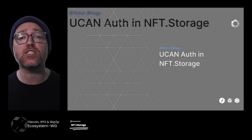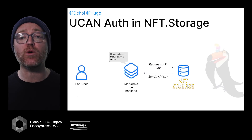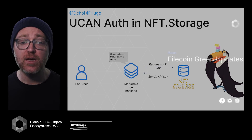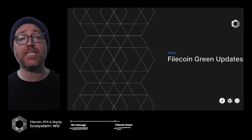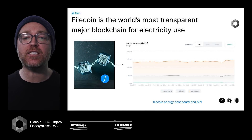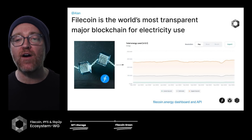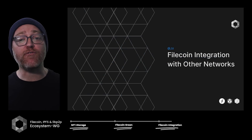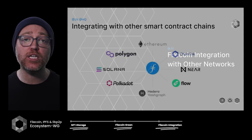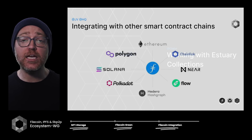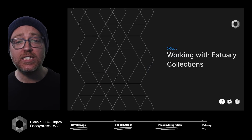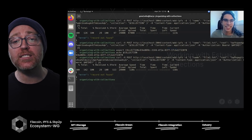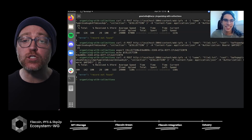The NFT Storage Team tells us about an integration with Fission's UCAN authorization. The Filecoin Green Deep Dive demos how you can estimate the energy of Filecoin SPs and check whether they are using renewable energy. We also learn about the Filecoin integration with other networks. Lastly, the ARG team shows us more about how to organize content and interact with collections on Estuary.